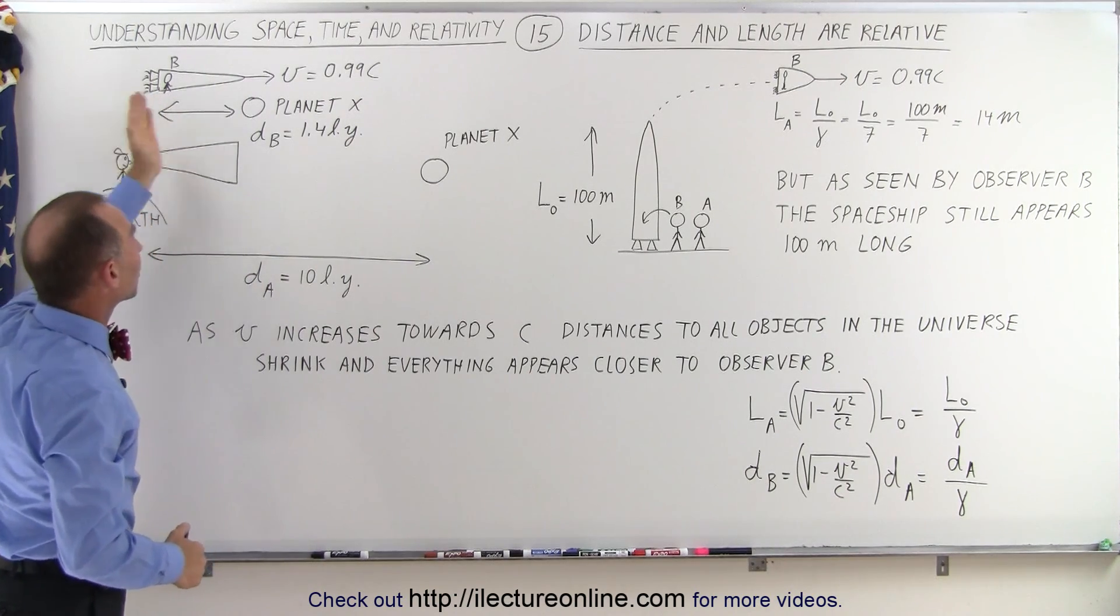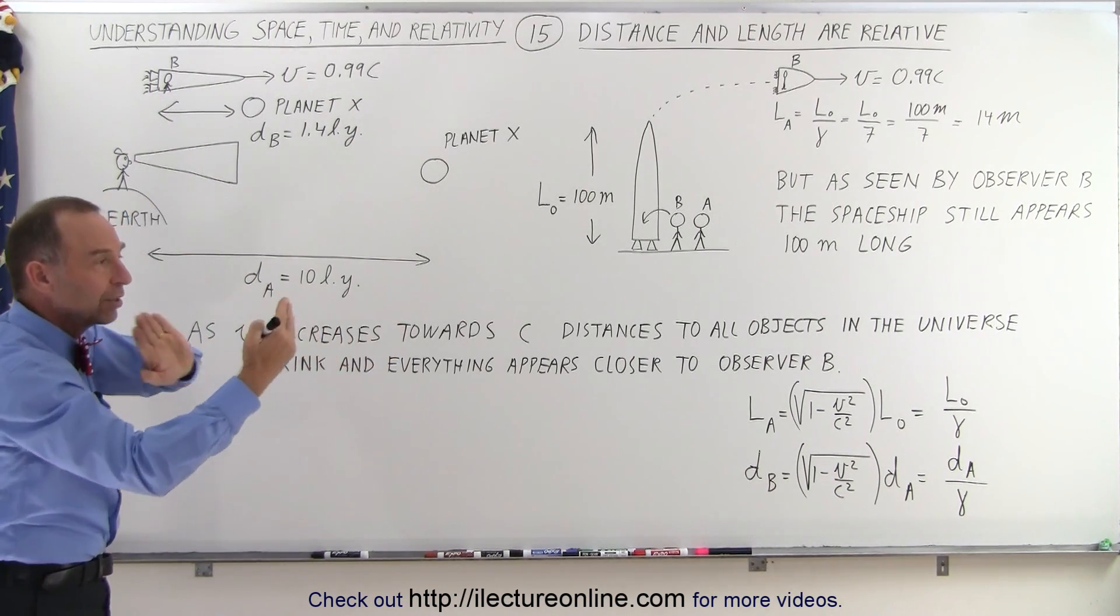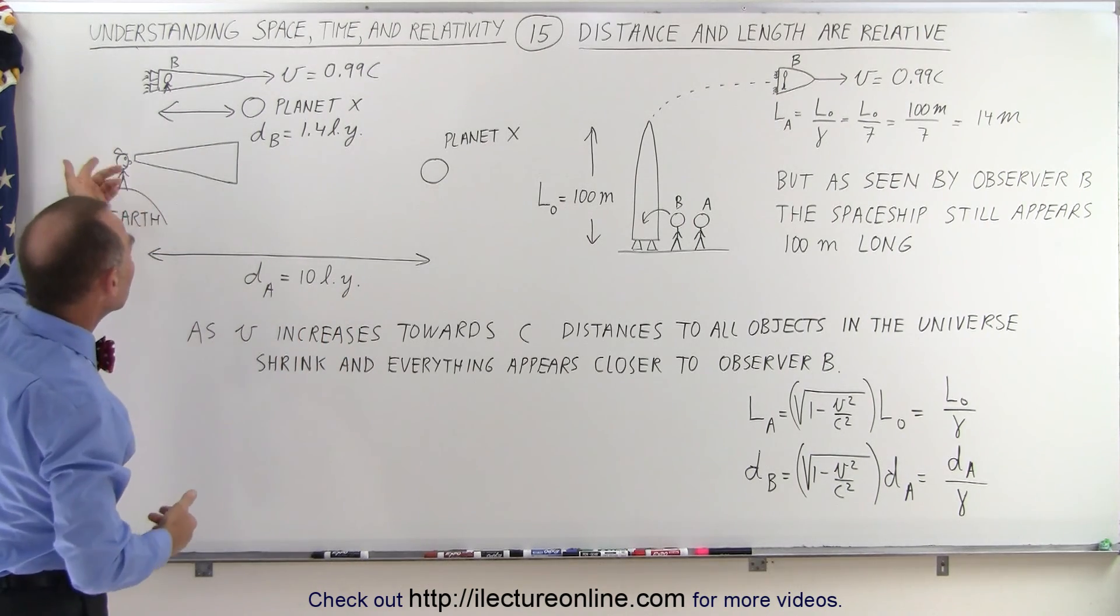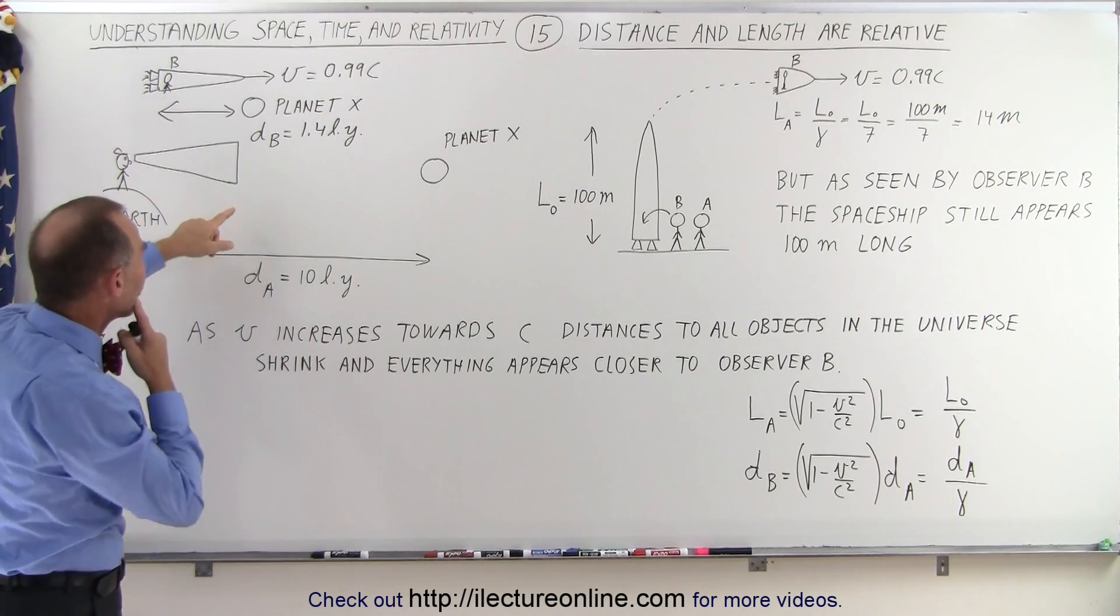We can then look at Observer B looking at space, and space seems to shrink, the distance to objects seems to shrink, as the speed of the spaceship increases, in the same fashion.